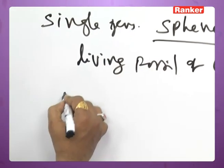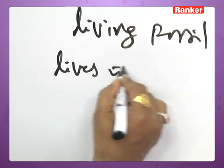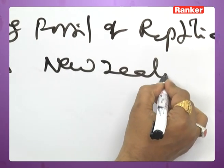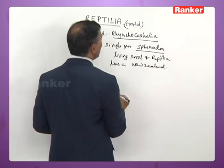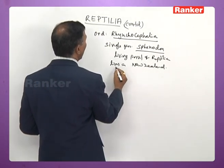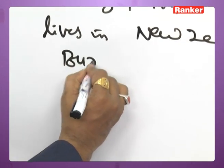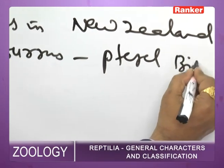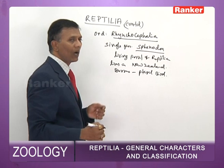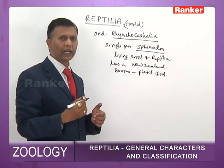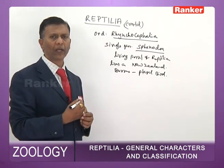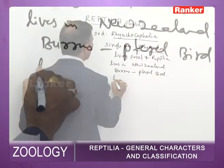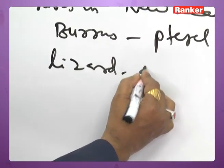Sphenodon is confined almost entirely to New Zealand, where it lives in burrows made by a seabird called the Tuatara petrel. Both organisms live on amicable terms. It looks like a lizard but has weak limbs.